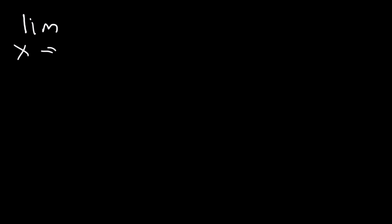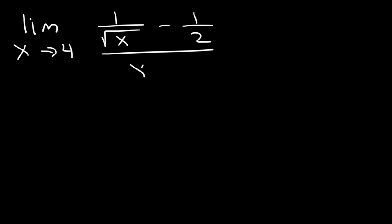What about the limit as x approaches 4 of 1 over square root x minus 1 over 2, divided by x minus 4? So this time we have a rational function, we have fractions, and we have a square root. So typically when we have a square root, we would multiply the top and the bottom by the conjugate. And when we have fractions, we need to multiply the top and the bottom by a common denominator. In this example, we need to do both.